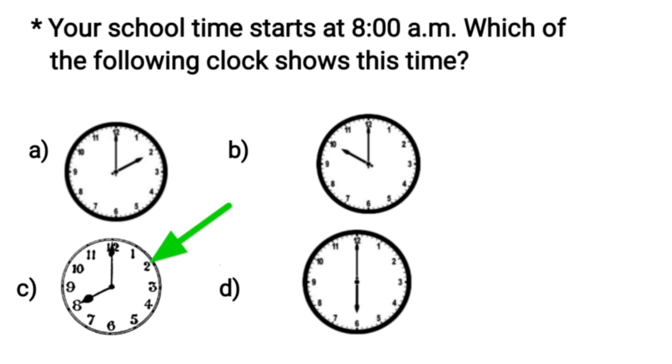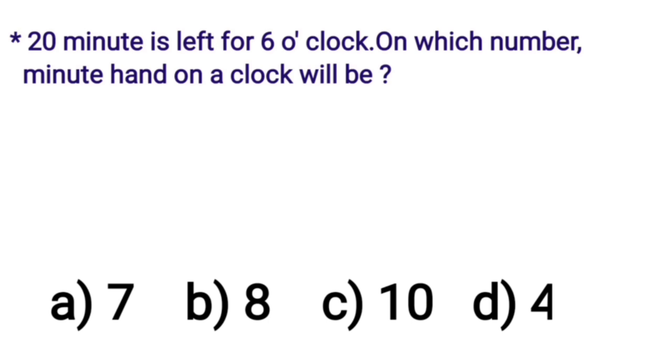Here is the time. The small hand is at 8 and the long hand is at 12. So, what's the time here children? Yes, it's 8 o'clock. This is the time we want. So, option C is the correct option.